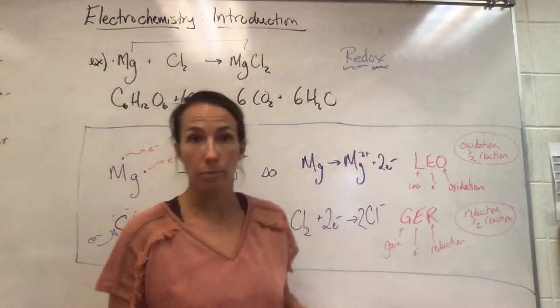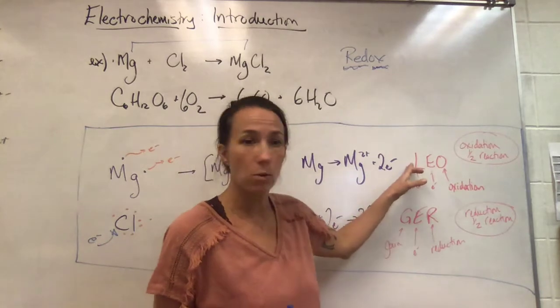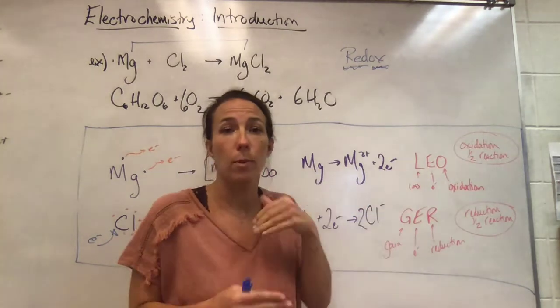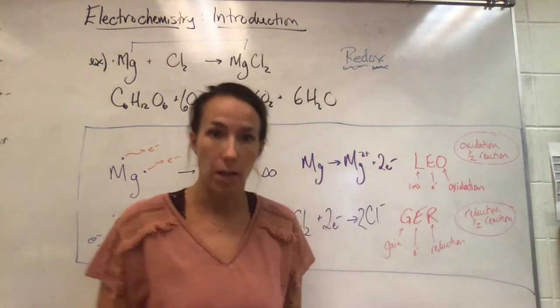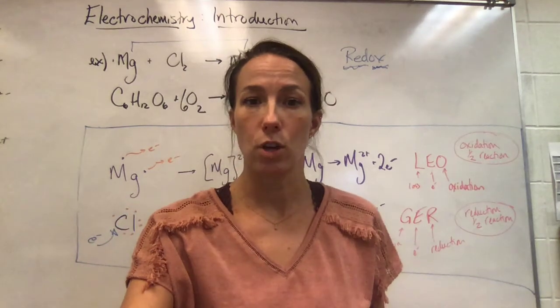We memorized this by Leo the lion says grr. That helps us remember the loss of electrons is oxidation, gain of electrons is reduction. So this takes a bit of practice, so let's try a few together.